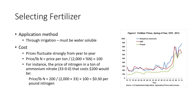Growers also base their fertilizer selections on the means used to apply fertilizer. For example, fertilizers applied through the irrigation system must be water-soluble. Fertilizer selection commonly depends upon price; the least costly fertilizer per pound of plant food is commonly selected. Cost can be calculated as follows: price per pound of nitrogen equals the price per ton divided by 2,000, times the percent nitrogen, times 100.